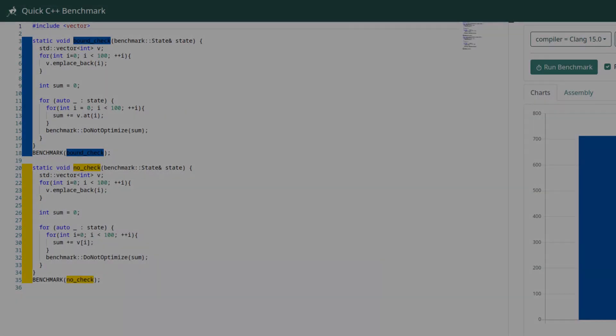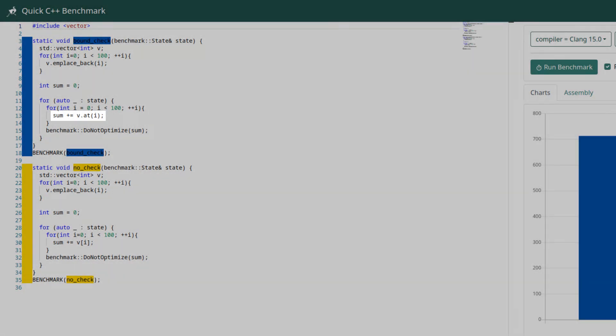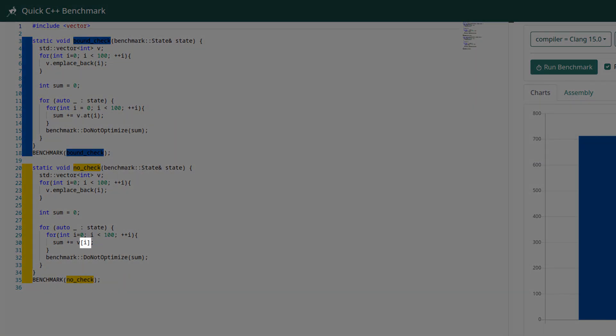By how much does bound checking slow down the code? Here's a simple sum loop benchmark that attempts to measure it. The loop has four steps: loop condition, bound check, sum addition, and index increment. In the second version the bound check step is removed.